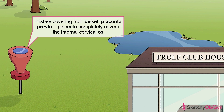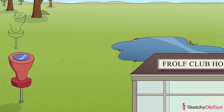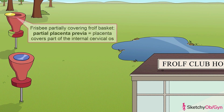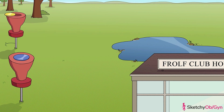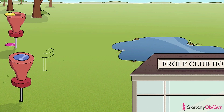There are a few other conditions related to placenta previa. A partial placenta previa is when the placenta only covers part of the cervical os, just like the second frisbee is only partially covering the basket. A low-lying placenta is when the placental edge falls within two centimeters of the internal os but doesn't cover any part of the os.